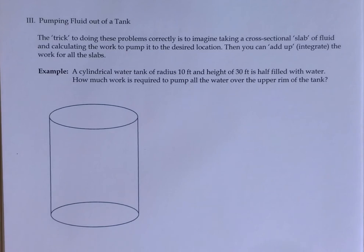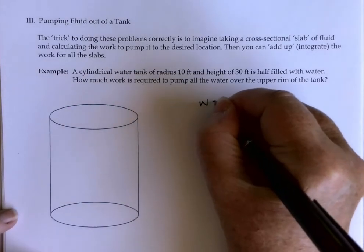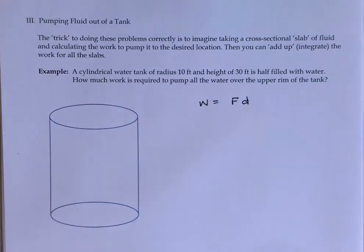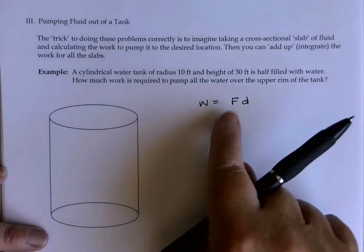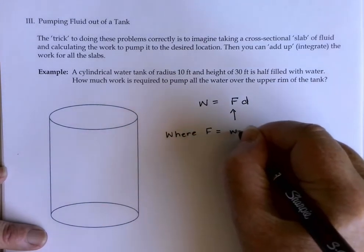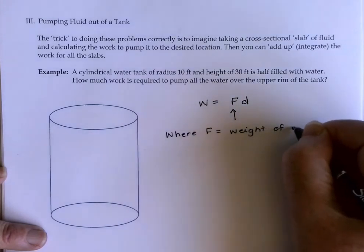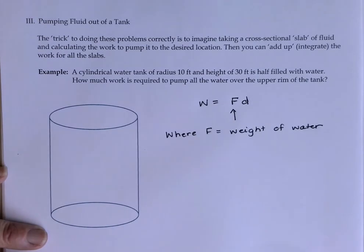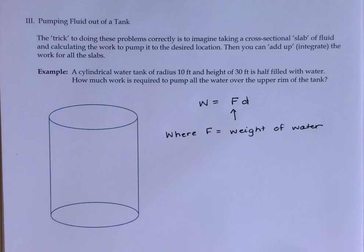There are a couple of things here. First, we always know work is force times distance. We've seen how we calculate force: in lifting problems we used F = ma, and in Hooke's law we used F = kx for springs. Here, the force is actually the weight of the water. You'll need to be alert — there are two different possibilities for calculating weight depending on whether we're in the American system or the international system.